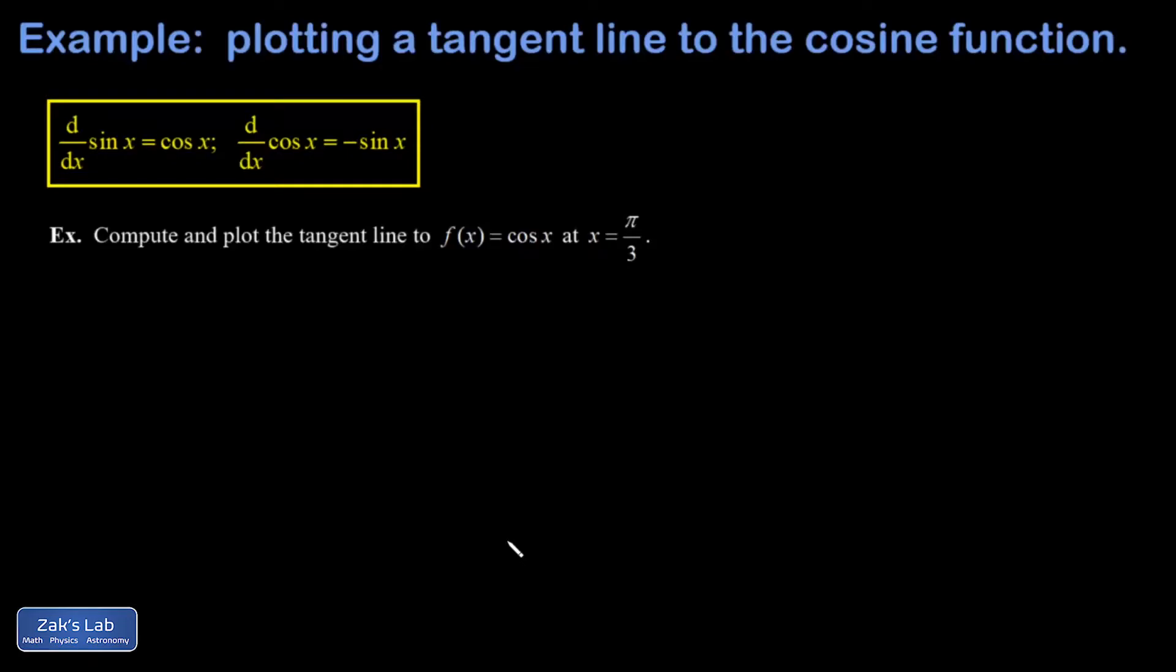In this video, we're asked to plot a tangent line to a cosine function at a particular value of x, that's a special angle, pi over 3. And we're reminded at the beginning what the basic derivatives are for sine and cosine. So when you differentiate the sine function, you get cosine. When you differentiate cosine, you get the negative of the sine function.